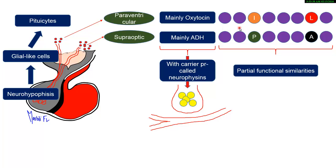As you can see, oxytocin has almost similar amino acids to anti-diuretic hormone, except for two positions. In oxytocin you have isoleucine and leucine at those two positions, whereas in ADH you have phenylalanine and arginine instead. In all other positions, the amino acids are the same.